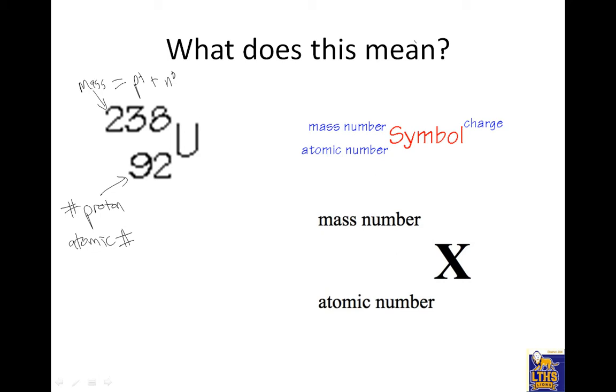So from this isotope right here, it has 92 protons. Notice how it doesn't have a charge. There's nothing up here. So that means it would have 92 electrons, and it would have 238 minus 92 is your neutrons. So 146.